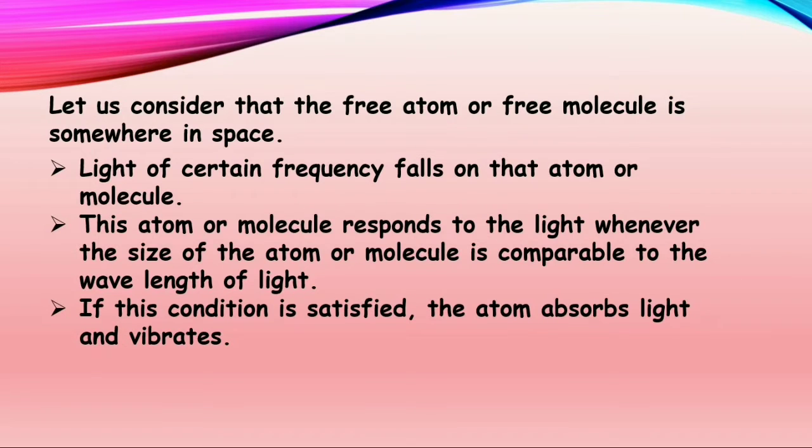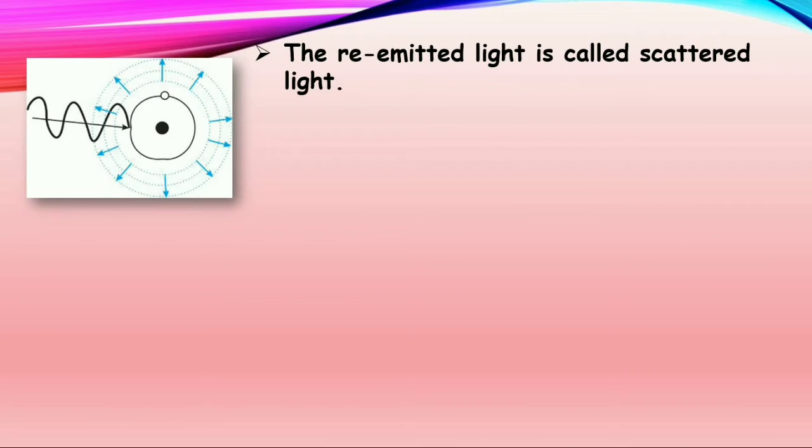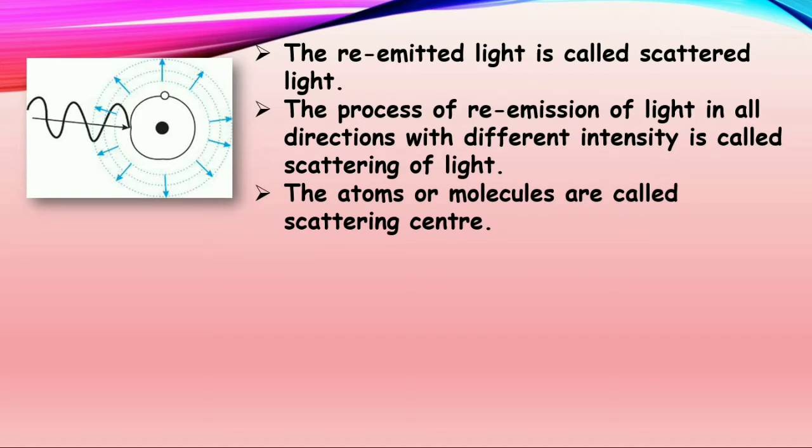If this condition is satisfied, the atom absorbs light and vibrates. Due to these vibrations, the atom re-emits a certain frequency of light energy, which is a fraction of absorbed energy in all directions with different intensities. The re-emitted light is called scattered light. So the process of re-emission of light in all directions with different intensities is called scattering of light. The atoms or molecules are called scattering centers.